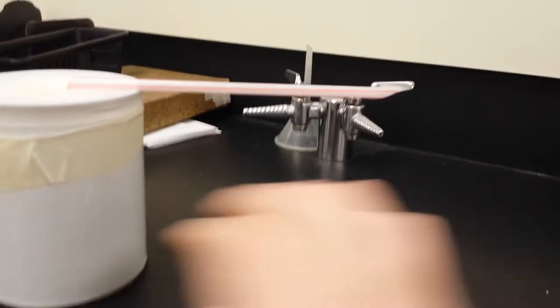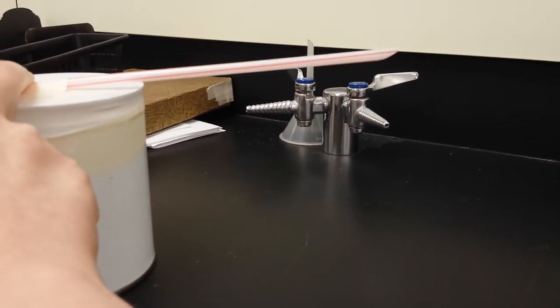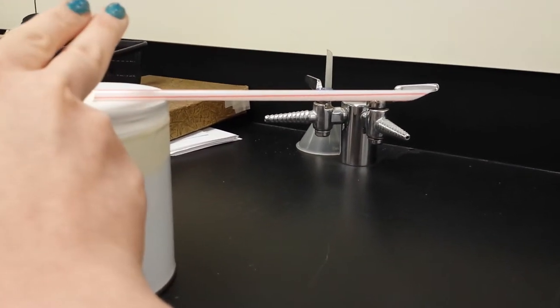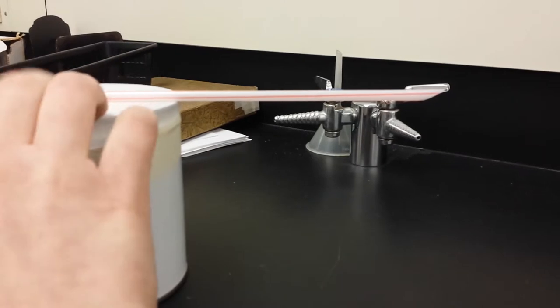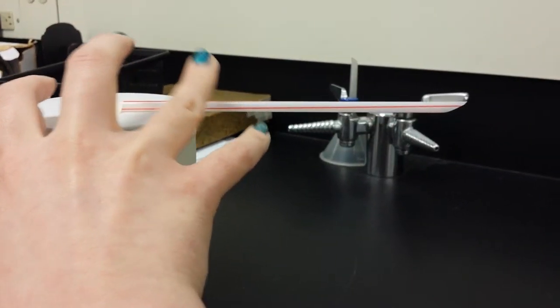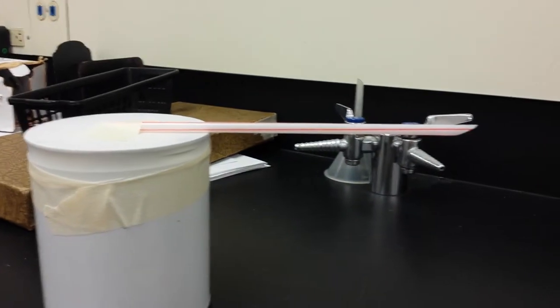When it pushes down onto the balloon, our straw is going to go up. Sometimes the air pressure out here might drop and that would pull up on the balloon, which would cause our straw to tip down.